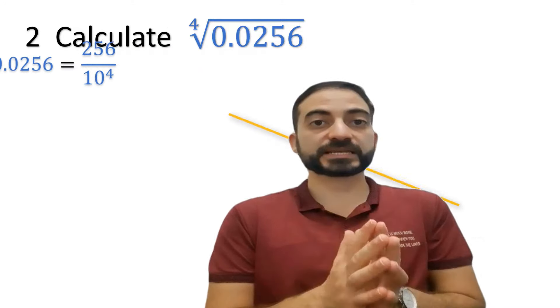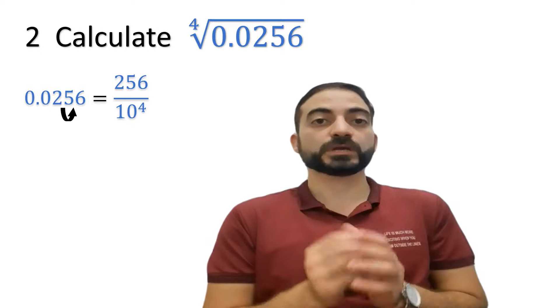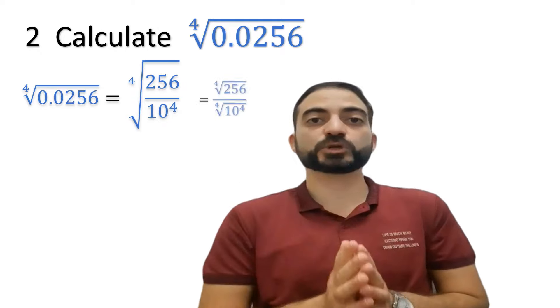0.0256 is the same as 256 over 10 power 4. Here we can put the fourth root on the numerator and the fourth root on the denominator.